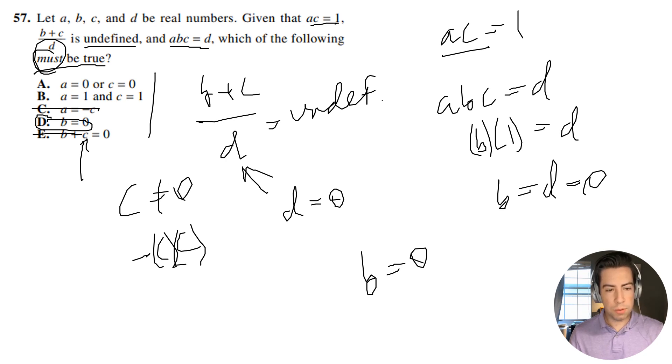If A equals 1 and C equals 1, I mean that could be true, right? But there's no way to know. For all I know, C could equal 4 and A could equal 1/4, right? That would still give us 1. So that's out.